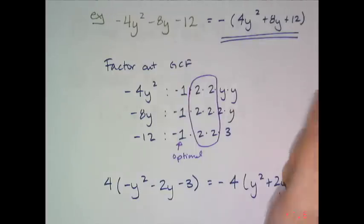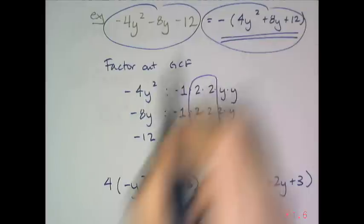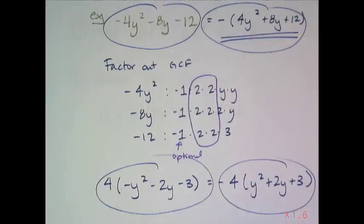These are equivalent, because when I multiply them out, I'm going to get the negative 4y² - 8y - 12. And once again, if I wanted to, I can check this one, this one, this one, and this one on my calculator, and they're all going to be equivalent.